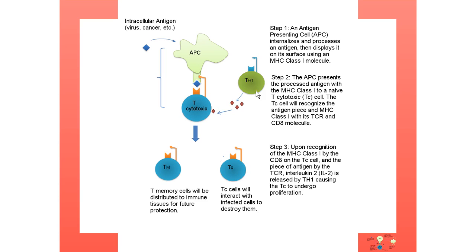Interleukin 2 stimulates the cytotoxic T cell to undergo clonal expansion, producing both memory cells and active cytotoxic T cells. The memory T cells will go to the secondary lymphoid tissue for subsequent infections, while the active T cells will be used to kill infected cells.